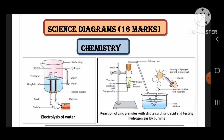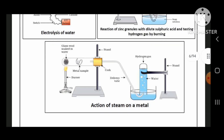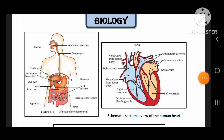So look at chemistry first. Electrolysis of water is the first one, and next is reaction of zinc granules with the dilute sulphuric acid and testing the hydrogen gas by burning. These are two diagrams, and next one is action of steam on a metal. Next diagram: testing the conductivity of the salt solution. Next, acid solution in water conducts electricity, and from biology: human alimentary canal, and next one is schematic sectional view of the human heart.